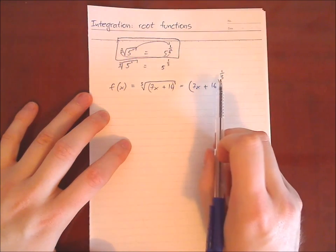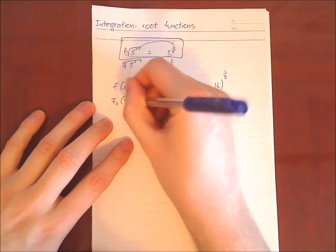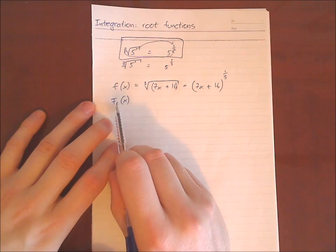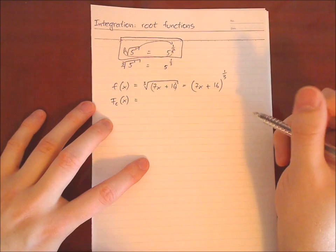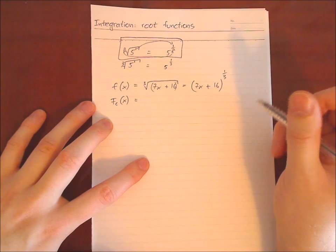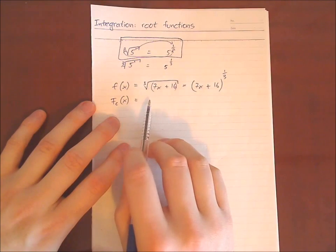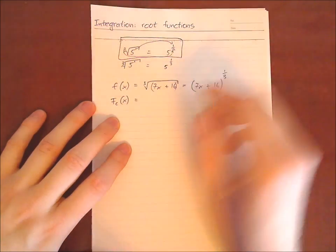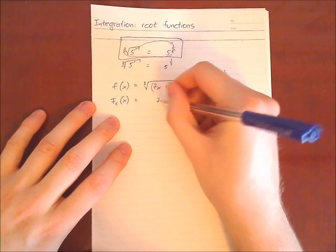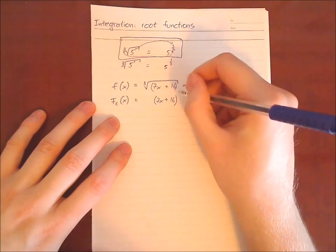This is much better to do integration with, since we can easily apply the power rule. So we have the integration now — with C here, don't forget the C — since when we differentiate we don't know about any constant term that disappeared. The rule when we integrate powers is we increase the power by 1. So we take 7x plus 16 and increase the power: 1 third plus 1 is 1 third plus 3 thirds, which is 4 thirds.